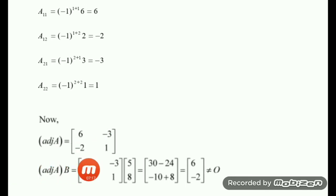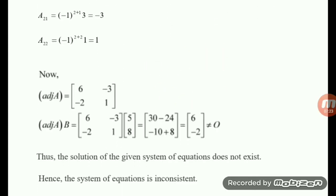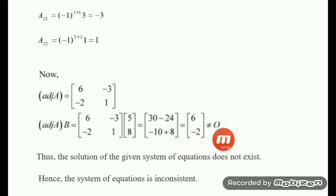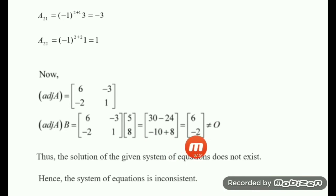Now compute the product of adjoint of A with B, where B is the column matrix 5 and 8. First element: 6 into 5 plus minus 3 into 8 equals 30 minus 24 equals 6. Second element: minus 2 into 5 plus 1 into 8 equals minus 10 plus 8 equals minus 2. The result is not equal to the zero matrix, so the system is inconsistent. If the product were a zero matrix, the system would be consistent with infinitely many solutions.